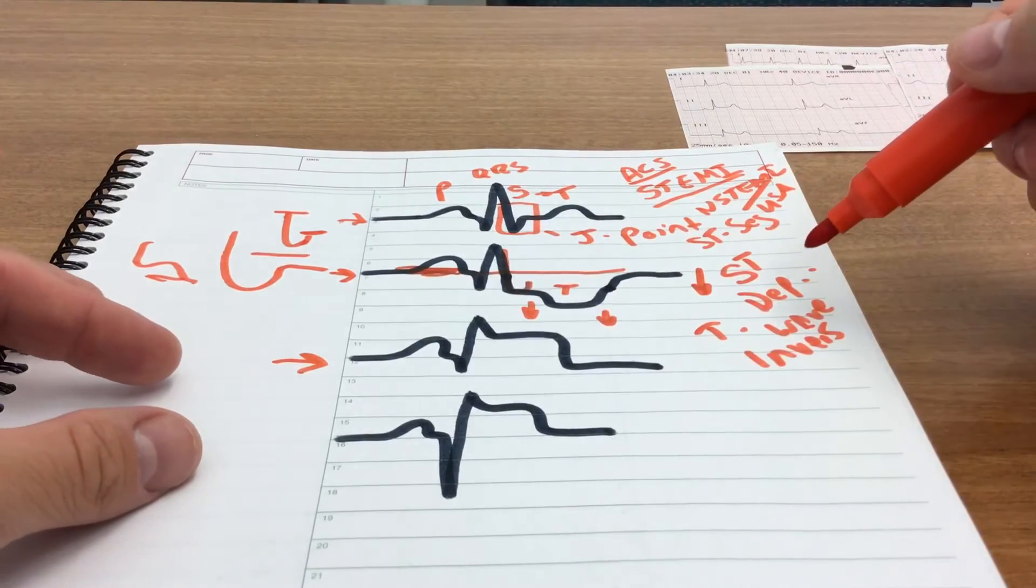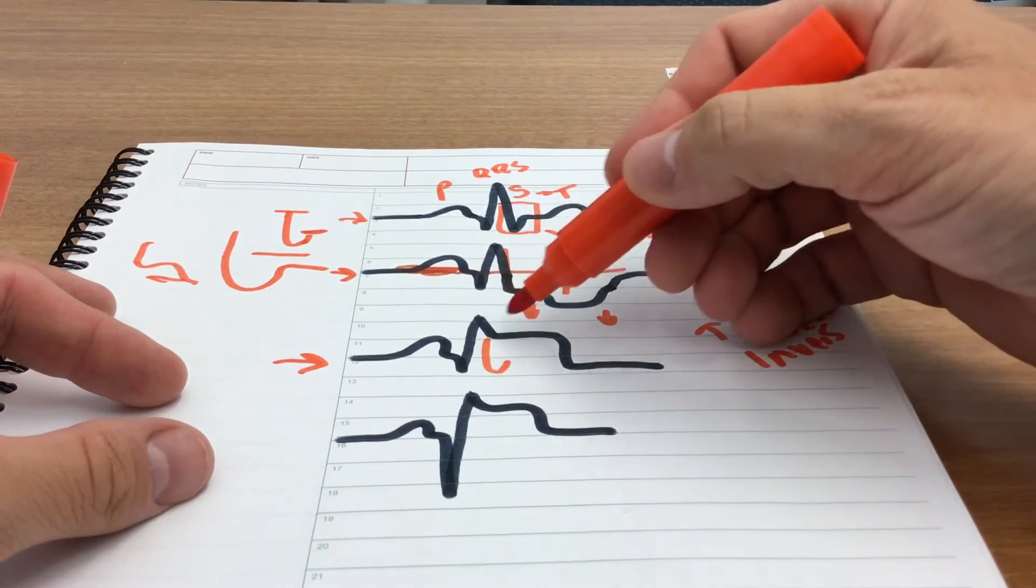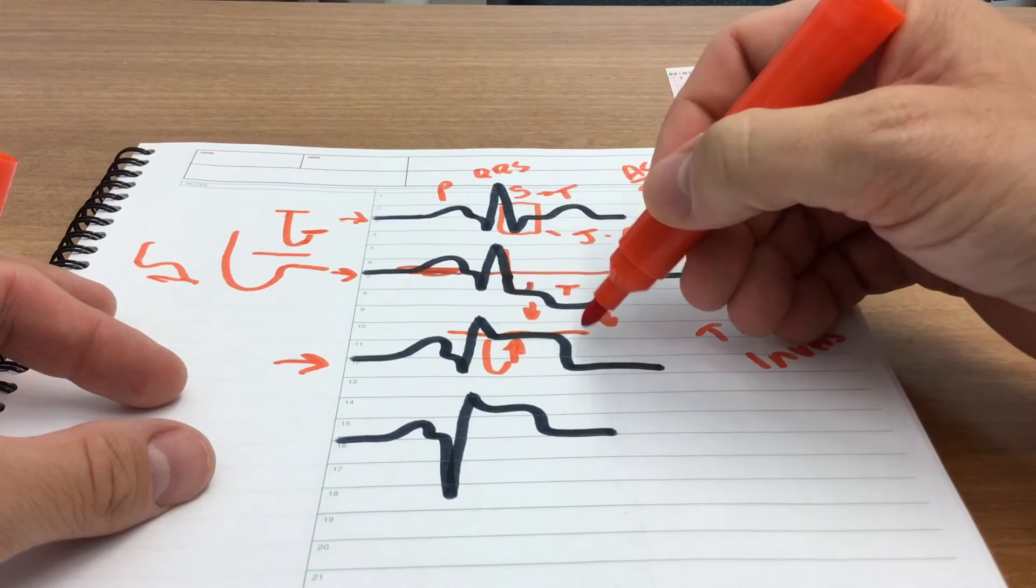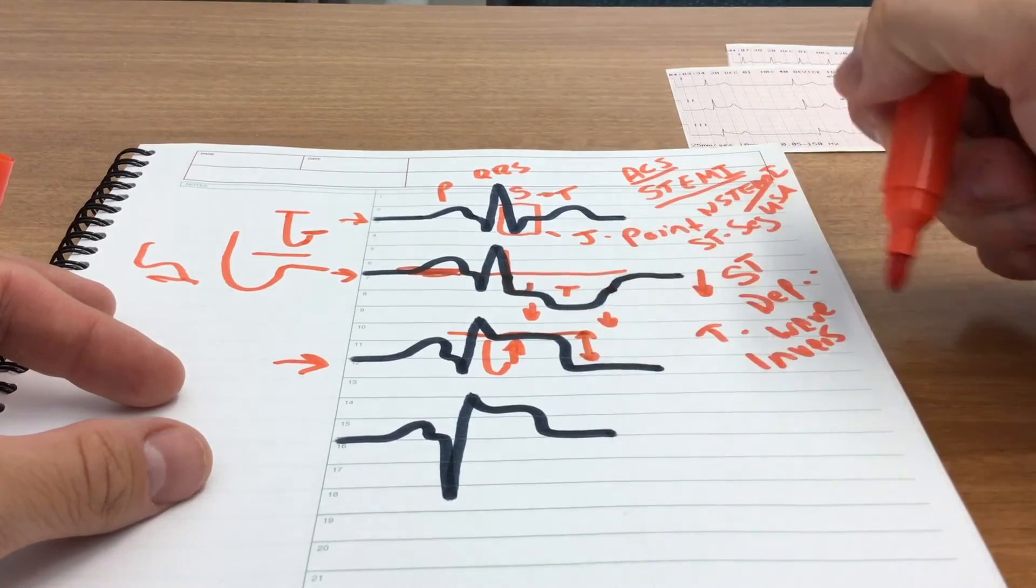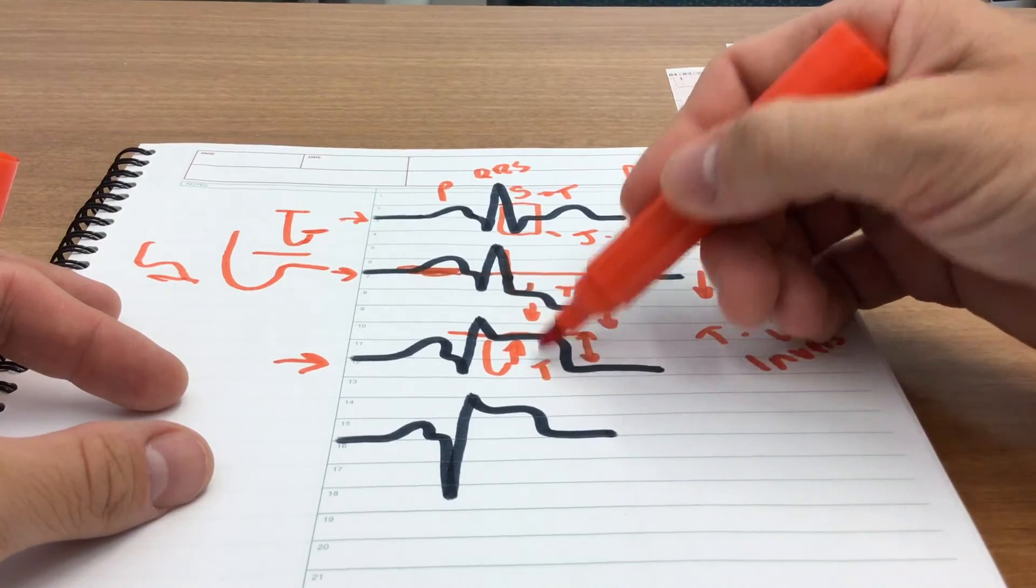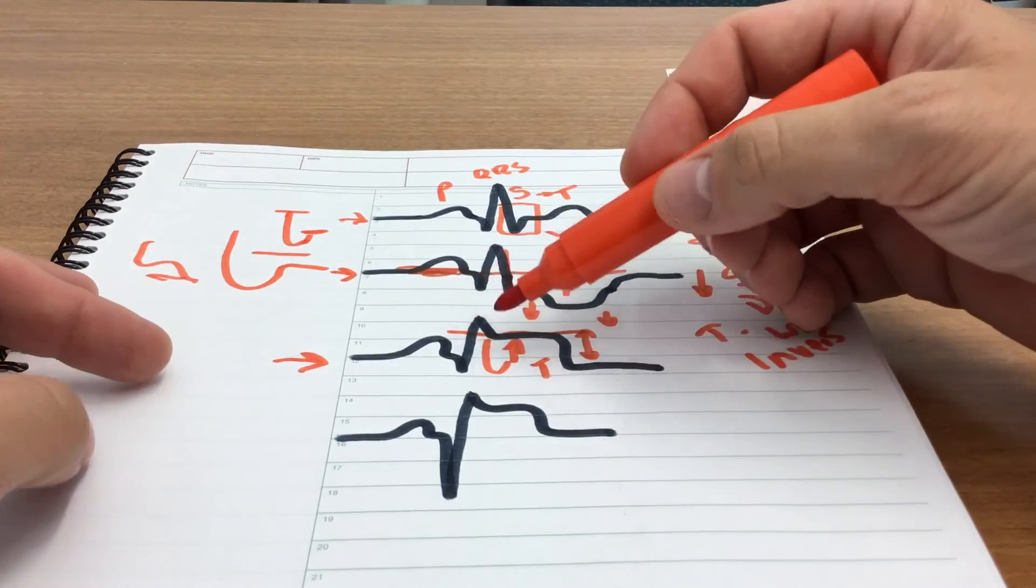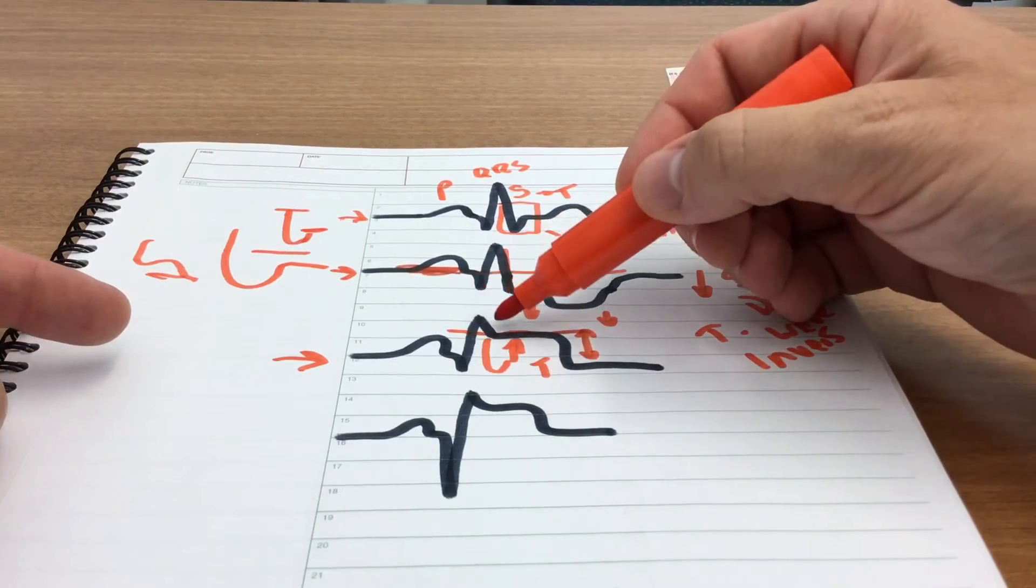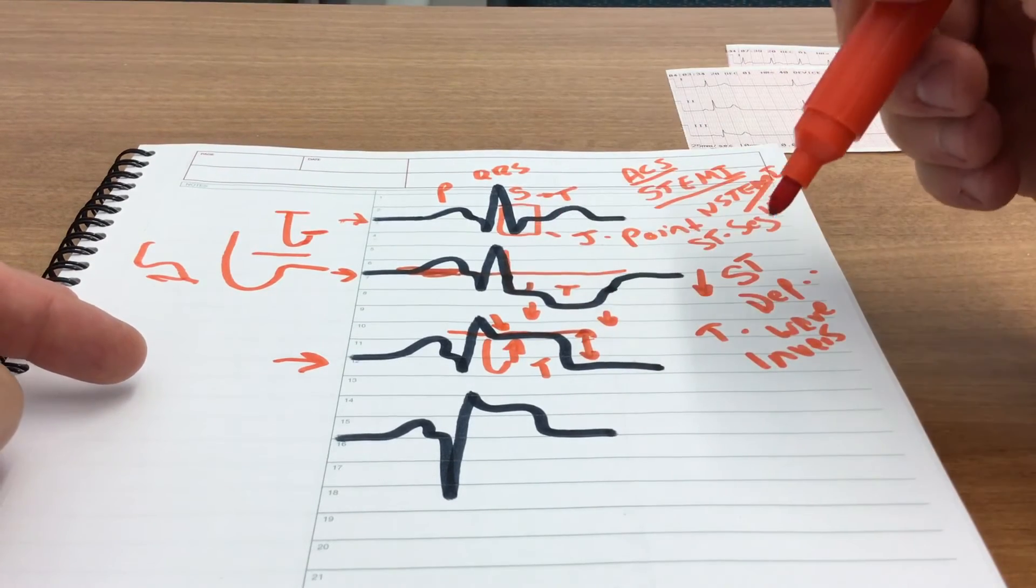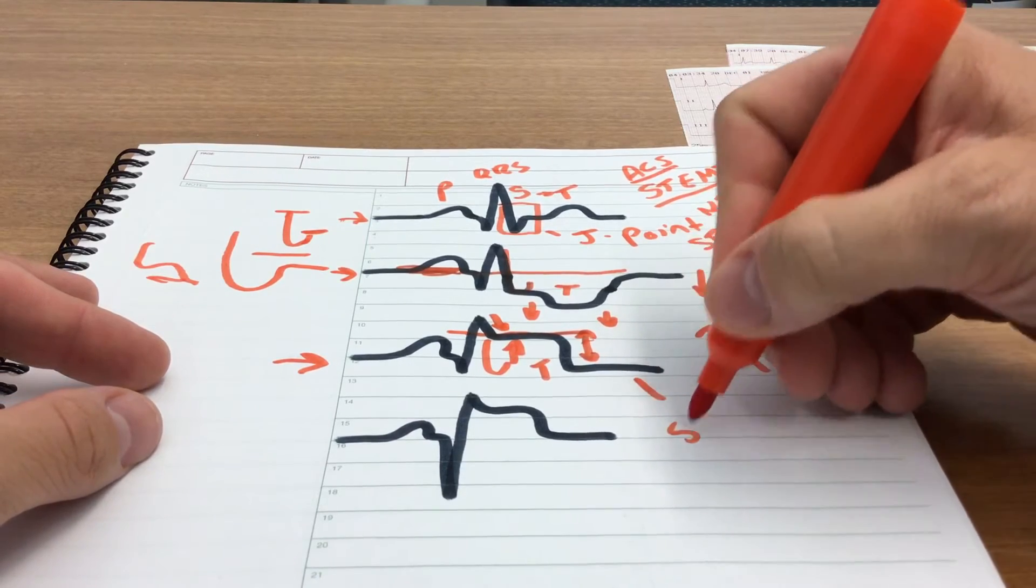So let's move on down to our next PQRST complex. If you look at your J point, you can clearly see that the J point is elevated, right here is elevated well above the baseline. The T wave here is in essence kind of blended into the QRS, and the S wave terminates well above, instead of below or at the baseline at the isoelectric line.